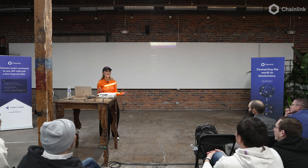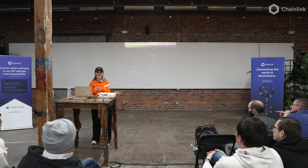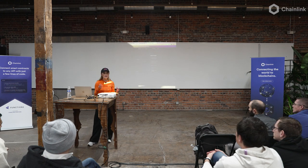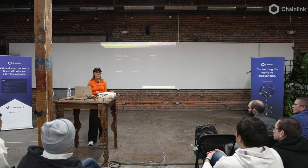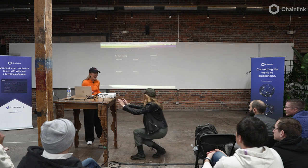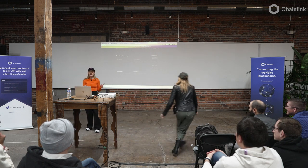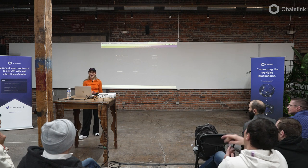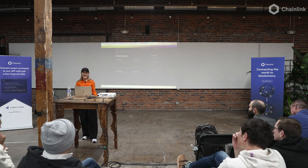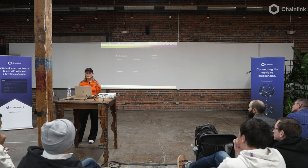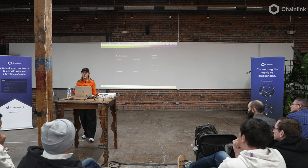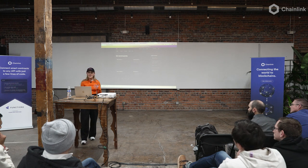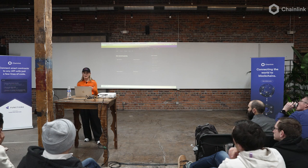I'm going to be highlighting the two main things you can do using Chainlink Functions that make it so special. The first thing is that you can make API requests super quickly. You can also do complex computations using that returned data. The example I'm going to do is a gaming example — I'm going to be using a chess API to retrieve two players' data, requesting their ratings, and then calculating their updated rating based on whether the player wins or loses.